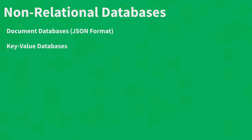Next up are key-value databases, which store keys and their actual value pairs. For example, you can store a password and the actual value that the password is. Next up are cache databases, which store cached values. You don't necessarily want to update them — you just want to retrieve information that you know won't change for a while, and you cache those values so you don't have to make requests to the database again.